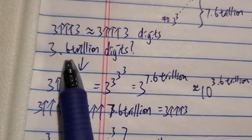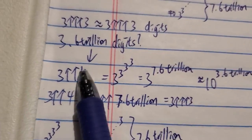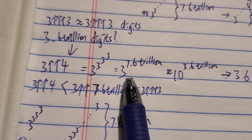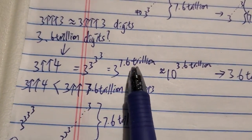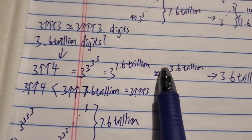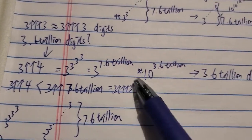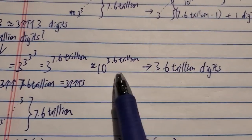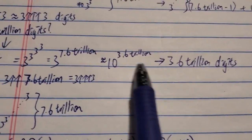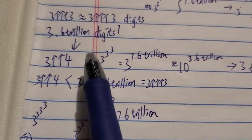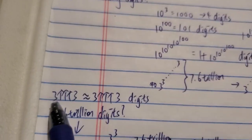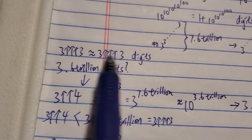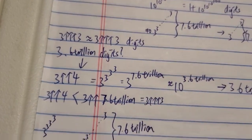So what number actually has 3.6 trillion digits? That number is 3↑↑4, which is 3 to the 3 to the 3 to the 3 — four 3s. This is equal to 3 to the 7.6 trillion, because 3 to the 3 to the 3 is 7.6 trillion. So this number is around 10 to the power of 3.6 trillion, which means it has around 3.6 trillion digits. So 3↑↑4 is the number with around 3.6 trillion digits — not 3↑↑↑3. 3↑↑↑3 has way, way more than 3.6 trillion digits.